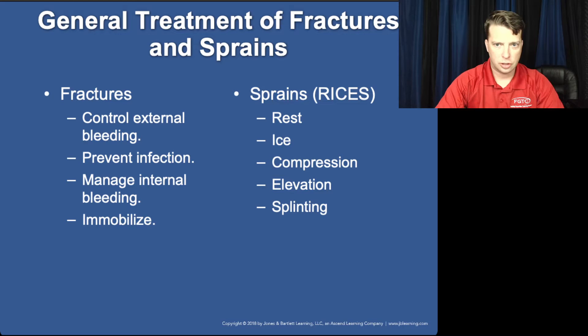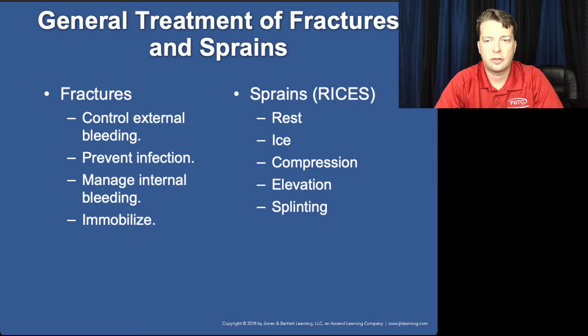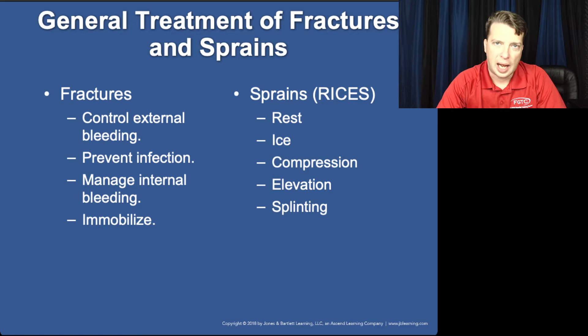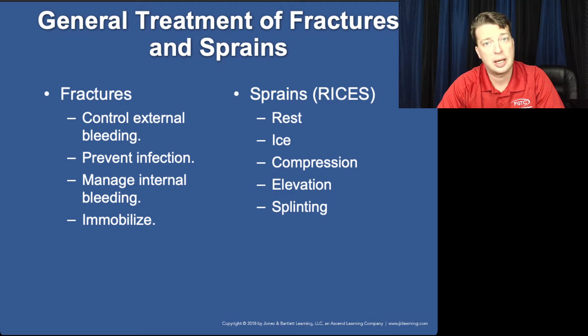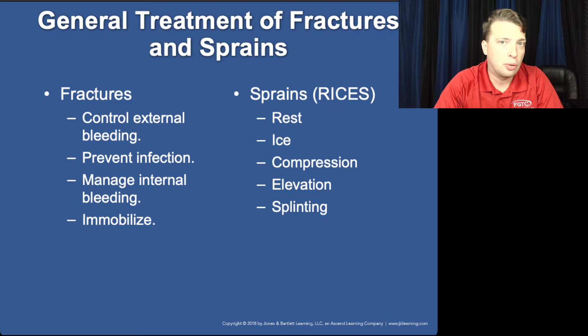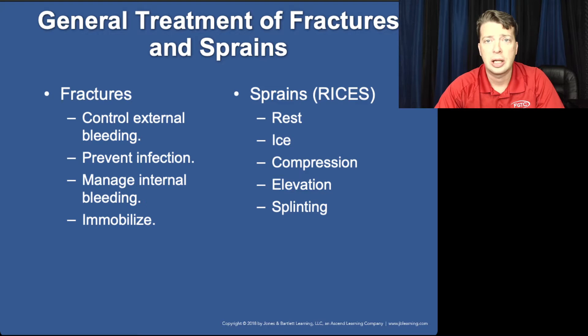With the treatment of fractures, infection is really only a concern if it's an open fracture. Managing internal bleeding can be a much more complicated task and is a really big concern — if it's a pelvic fracture, that could be up to 3,000 milliliters of blood loss. A femur fracture could be 1,500 milliliters of blood loss, and that's just from the bone itself, assuming we haven't ruptured an adjacent artery. Immobilization is going to be one of the best ways to control that internal bleeding. It also reduces pain and makes the patient more comfortable.